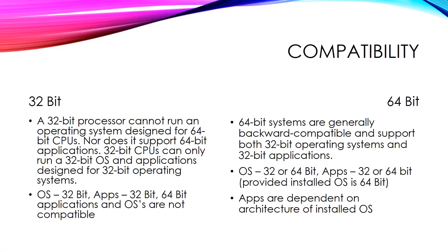For compatibility: a 32-bit processor cannot run an operating system designed for 64-bit CPUs, nor does it support 64-bit applications. 32-bit CPUs can only run a 32-bit OS and applications designed for 32-bit operating systems. 64-bit systems are generally backward compatible and support both 32-bit and 64-bit operating systems and applications.